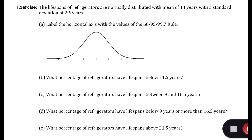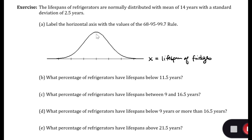So the lifespan of refrigerators are normally distributed with a mean of 14 years and a standard deviation of 2.5 years. We're going to go through and label our axes. The horizontal axis is the lifespan of fridges, and we have a mean here at 14.